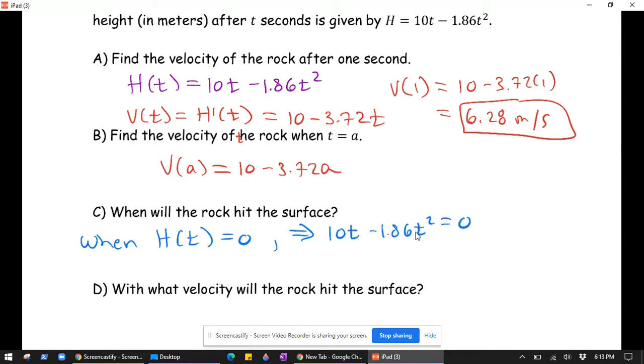We can factor out a t. So we get t times 10 minus 1.86t equals 0. So that tells us that at time 0, the rock will be at the surface, but that's just when it was launched.